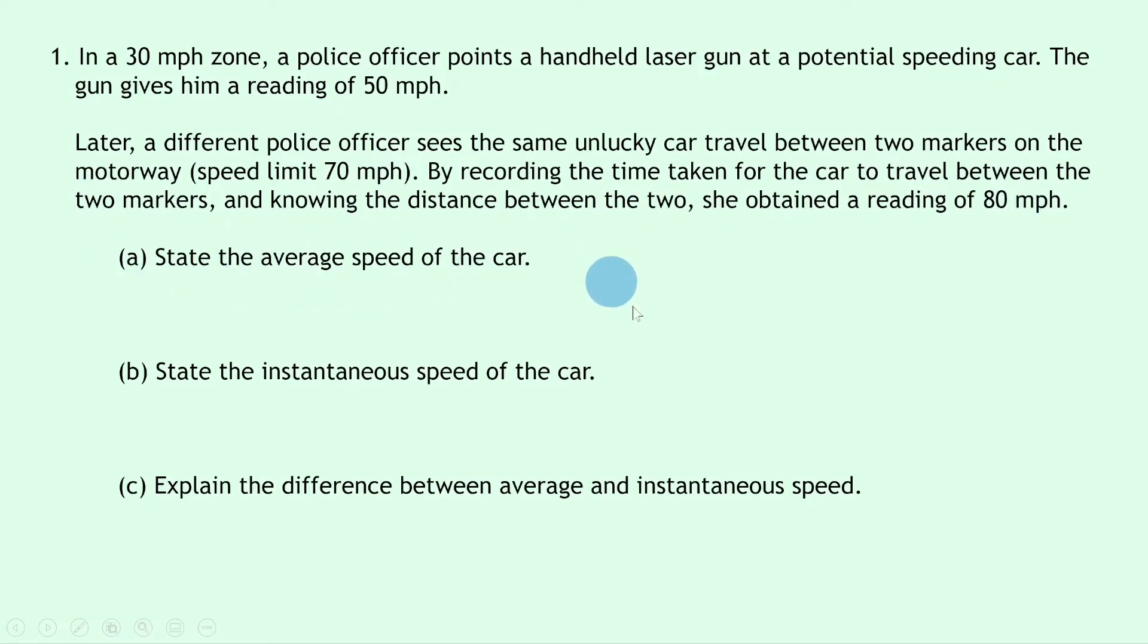Part A says to state the average speed of the car. Well this is simply just to get you to be able to pick out from the scenario what you think the average speed is. In this case when we have two markers and we measure the time taken for an object to travel between the two markers separated by a known distance, that is the same as measuring the average speed. So the average speed is 80mph.